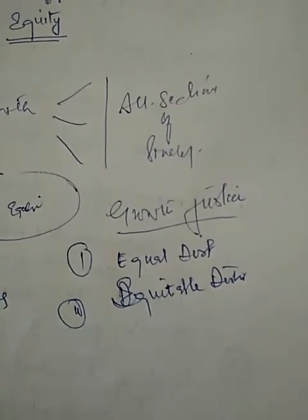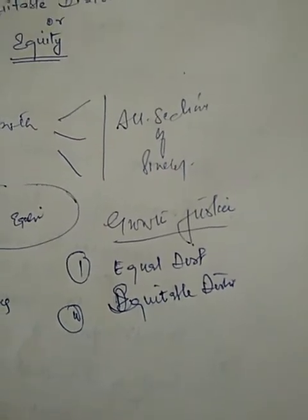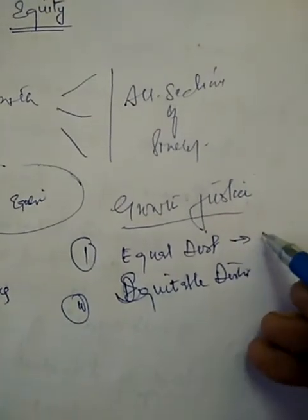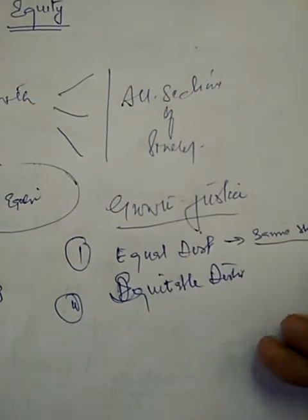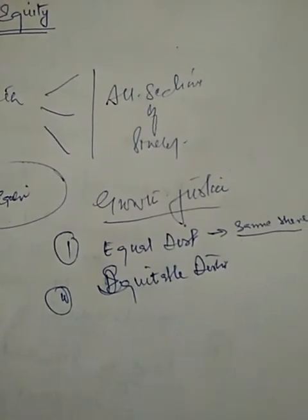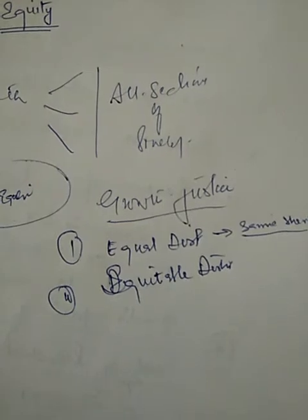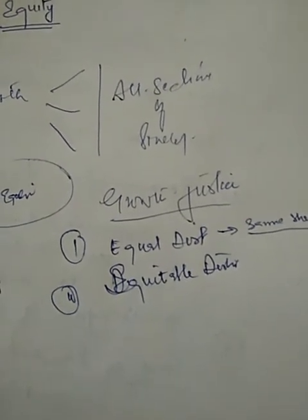It would mean that every individual in society gets the same share in the country's national income. Equal distribution means the same share for everyone. It would imply a situation when a doctor gets the same salary as a clerk in the hospital - that's equal distribution.